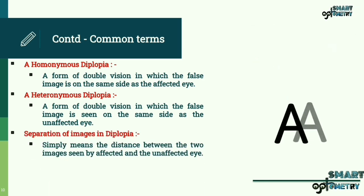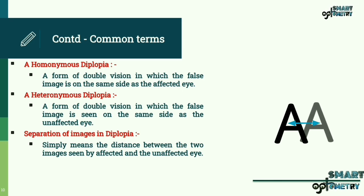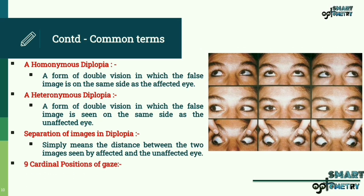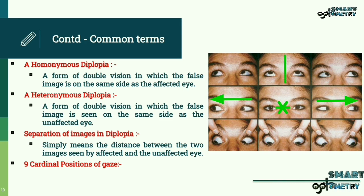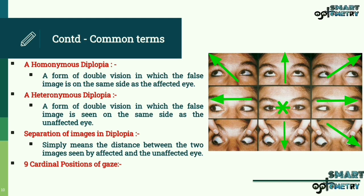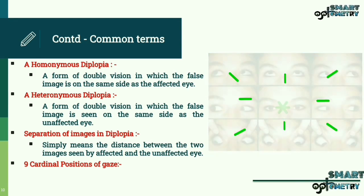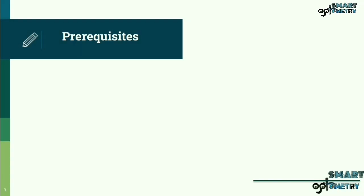Separation of images in diplopia simply means the distance between the two images seen by the affected and the unaffected eye. The nine cardinal positions of gaze are: straight ahead, left, right, straight up, up and to the left, up and to the right, straight down, down and to the left, and down and to the right. Let us now understand the prerequisites required for performing the diplopia charting test.